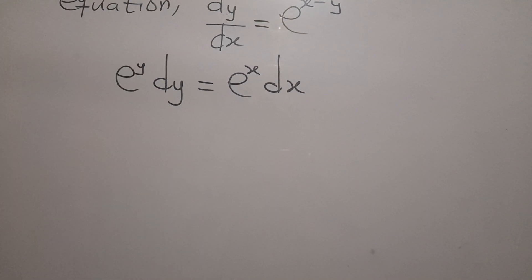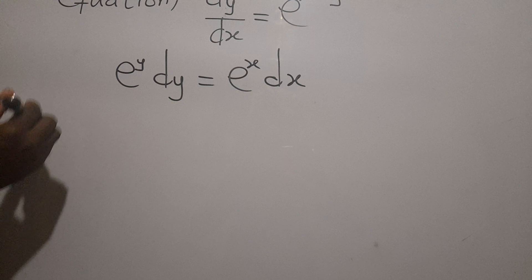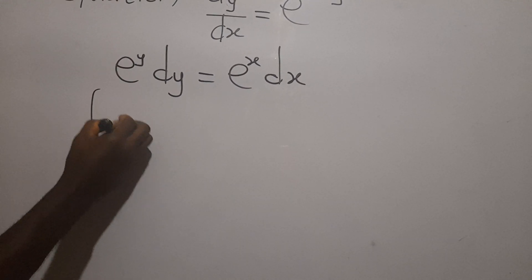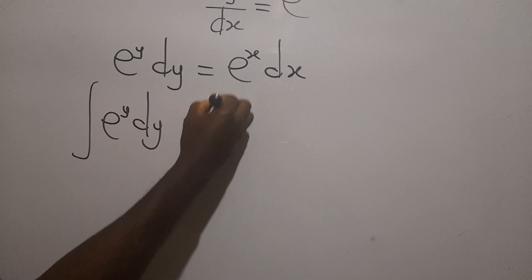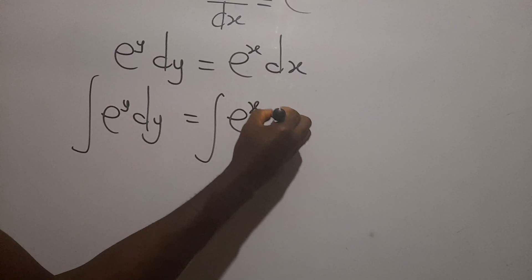So from here we integrate both sides to get our general solution. So we set the integral of e exponent y dy equal to integral e exponent x dx.